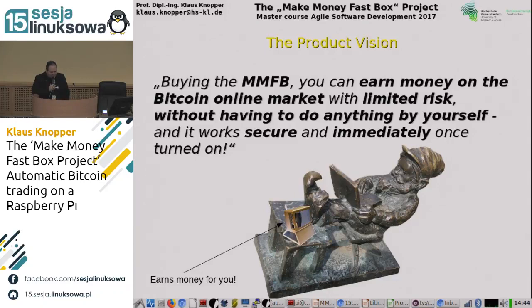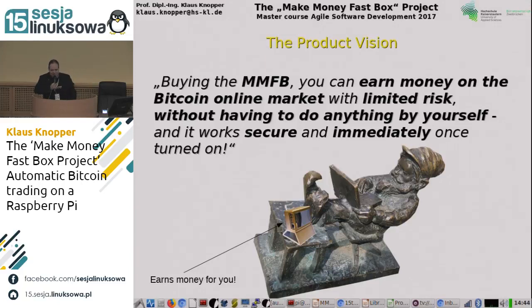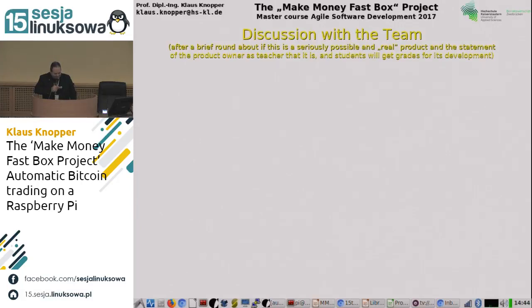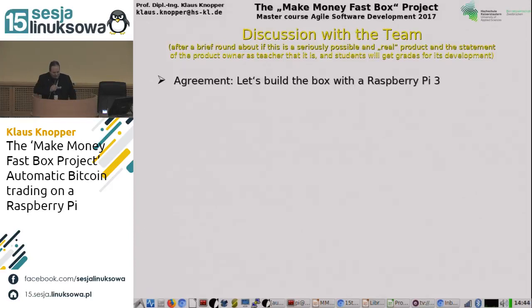The product vision: buying the make-money-fast box, you can earn money on the Bitcoin online market with limited risk, without having to do anything yourself — it works securely and immediately once turned on. It just sits on your table, you do nothing, and watch your money multiply. This was when the first two students quit the course. We had a brief discussion about whether this was really possible and whether I expected a real product to sell. I said yes, you get grades for it, and if you fail, you fail the course.